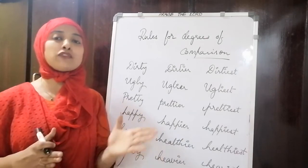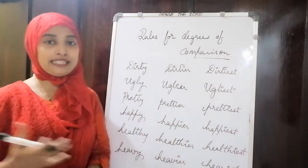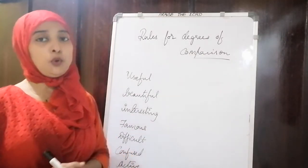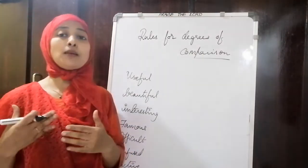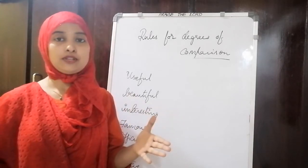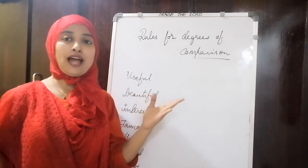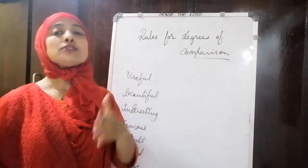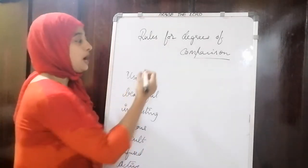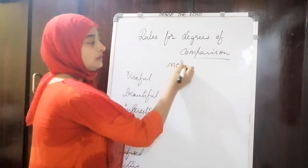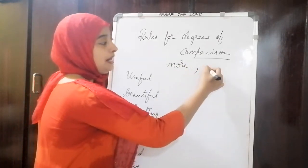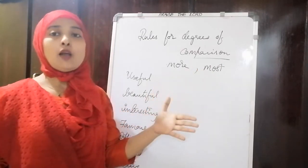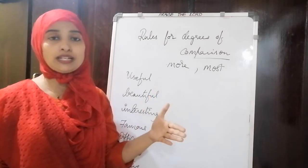Add ER for comparative degree and EST for superlative degree. The next rule: when a word has more syllables — when the word is large enough — instead of adding ER or EST, you add the word 'more' for comparative and the word 'most' for superlative. 'More' and 'most' are used for longer, multi-syllable words, like 'useful'.